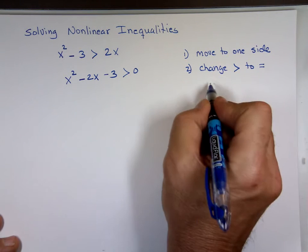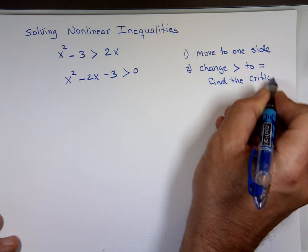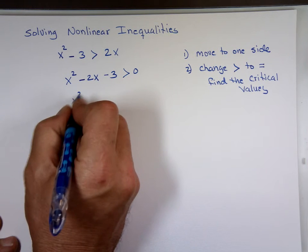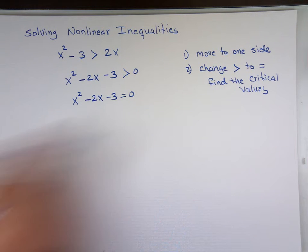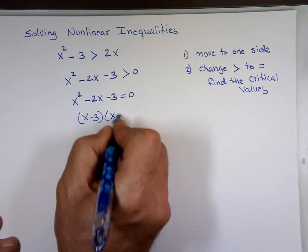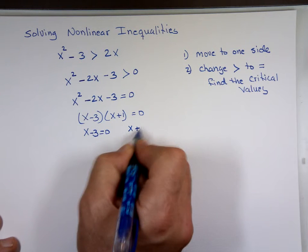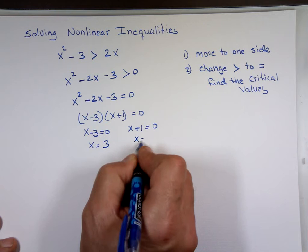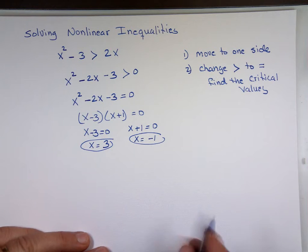Step number two: take that greater-than sign and change it to an equal sign so we can find the critical values. We now have x² - 2x - 3 = 0. Can we factor that? That's (x - 3)(x + 1). Set each factor equal to zero and solve — x equals 3, x equals negative 1.